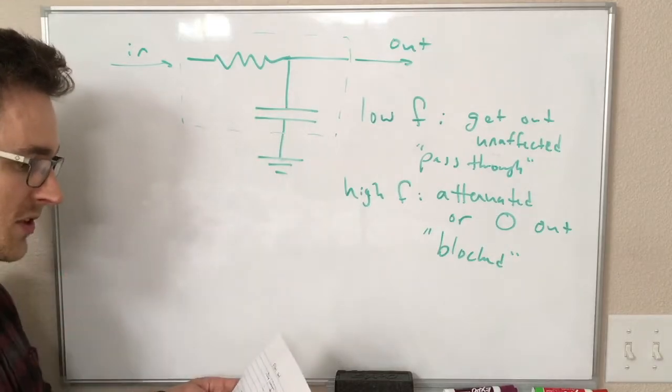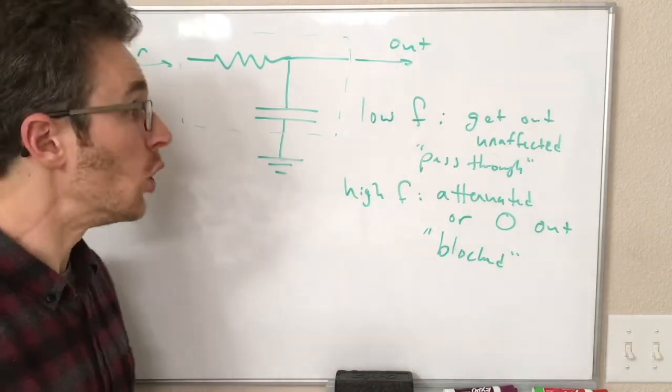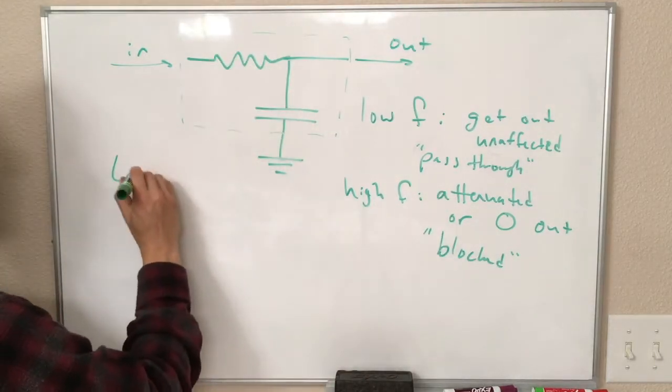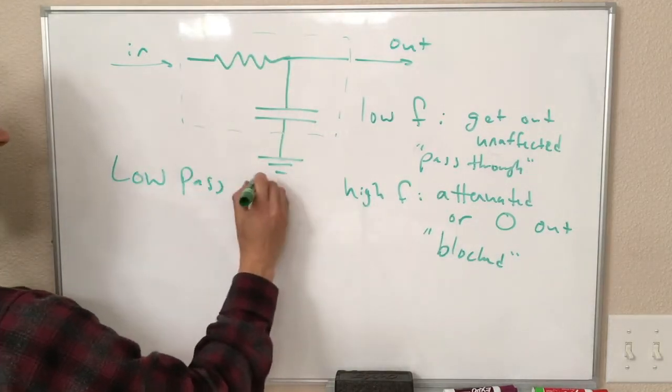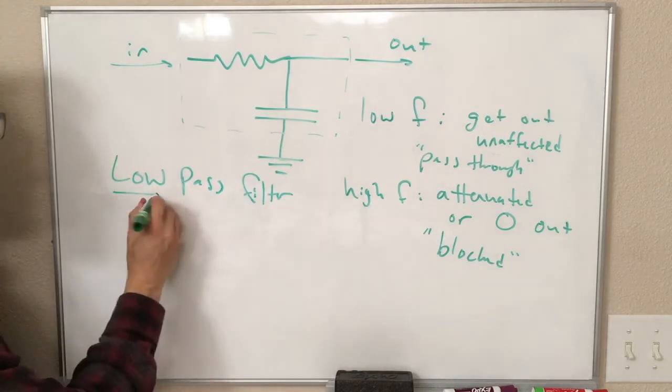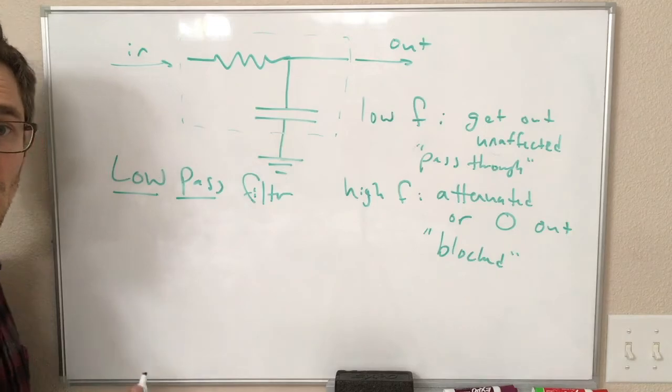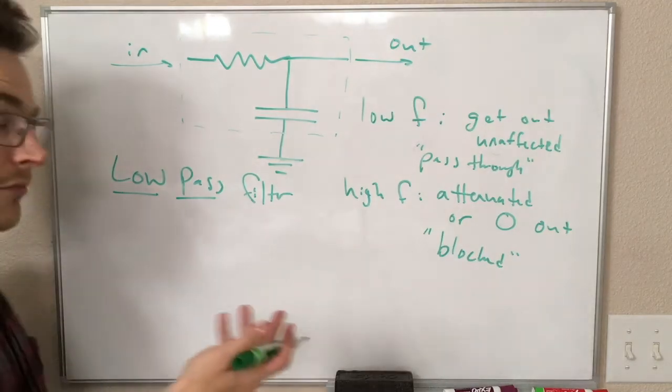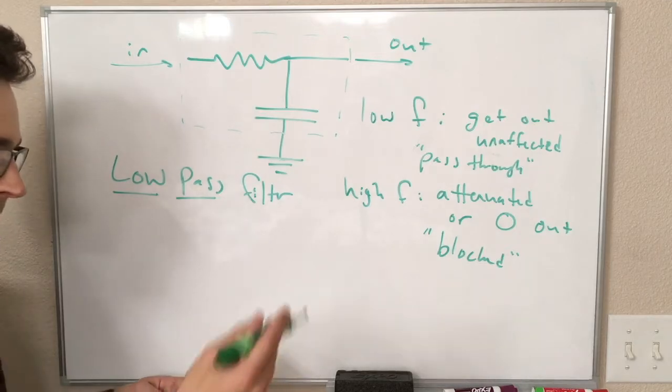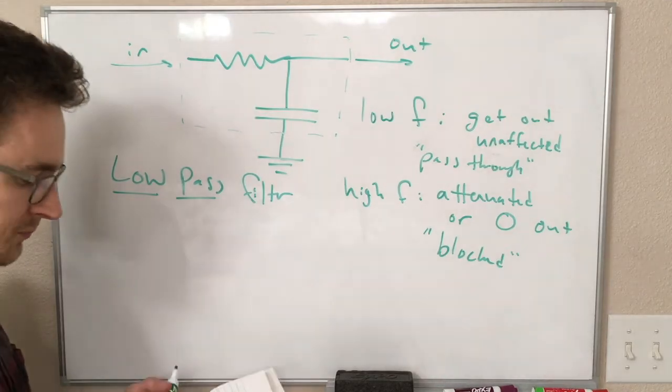That is why this is called a low-pass filter. This circuit is a low-pass filter. That is because low frequencies are able to pass through it, but at the same time it filters out these higher frequencies. The higher frequencies are unable to get to the output of the circuit.